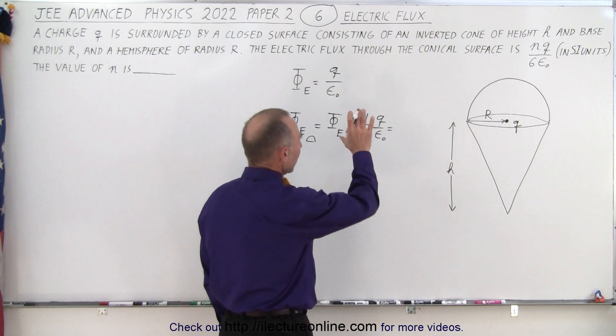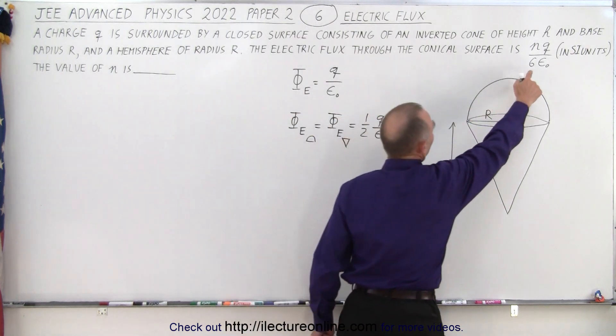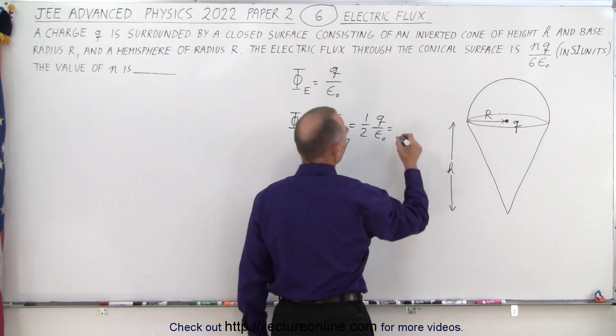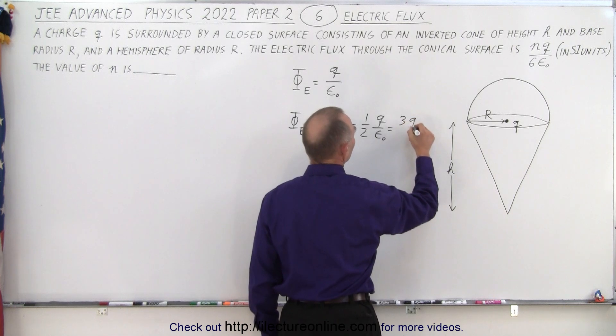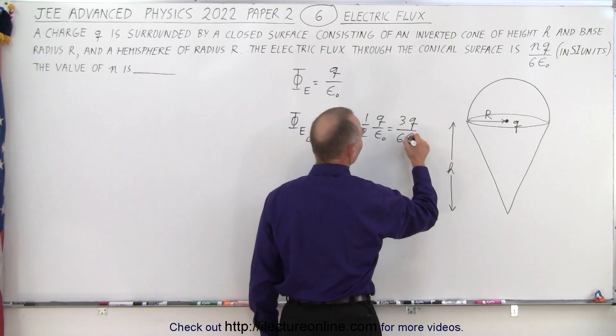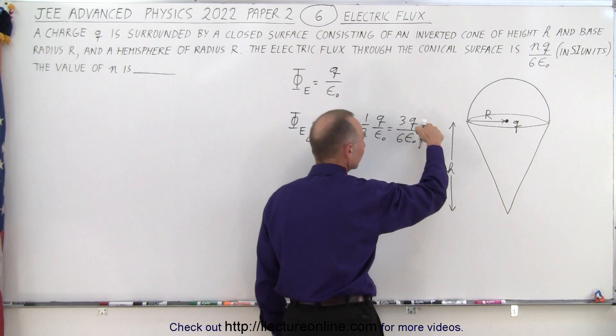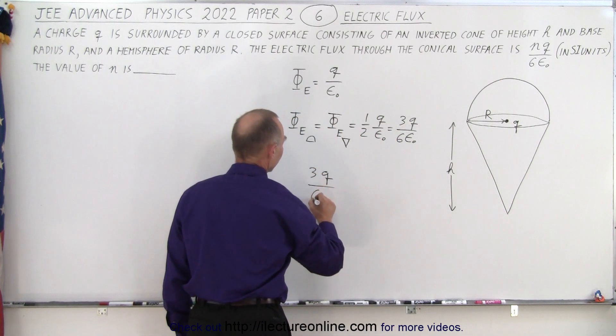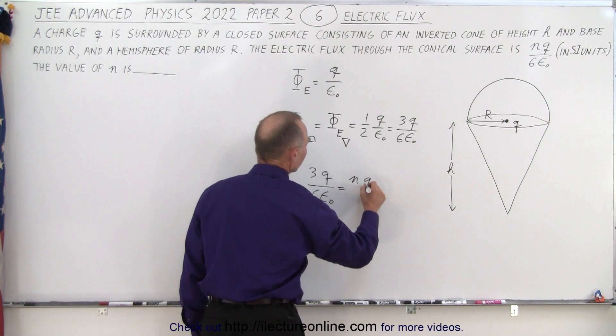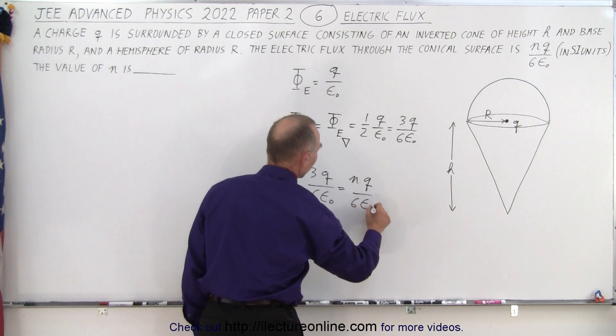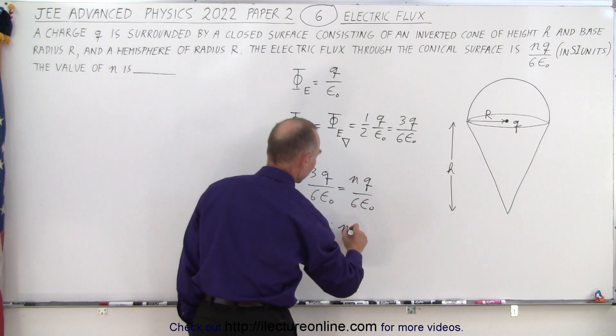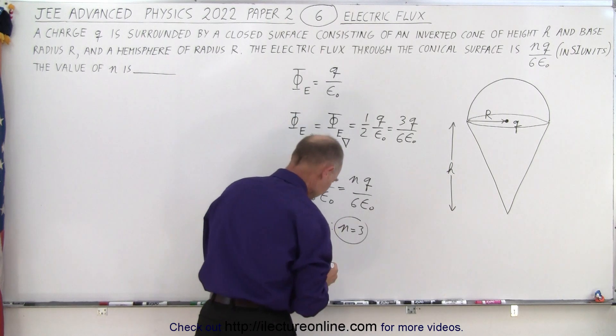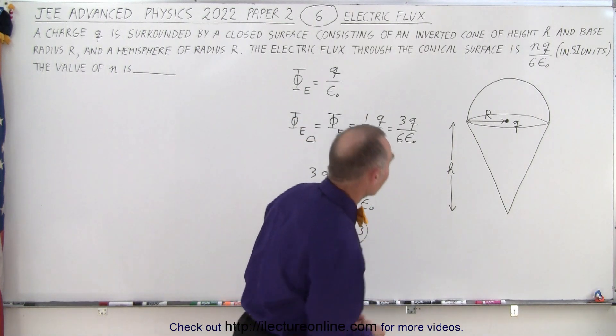So now if we multiply both the top and the bottom by three, because we want to get something that looks like this, we end up with 3Q divided by 6ε₀. Now if we set this equal to that, we have 3Q divided by 6ε₀, which is equal to NQ divided by 6ε₀. So very quickly we can see that N equals 3, and that will give us the solution to this problem.